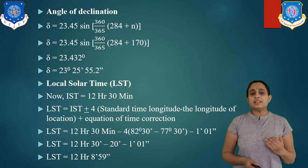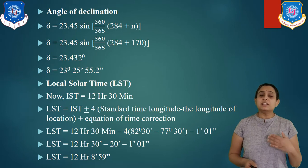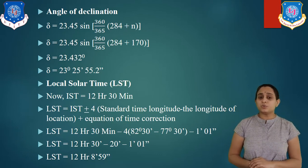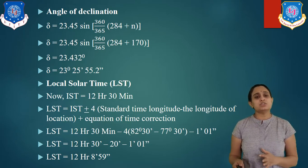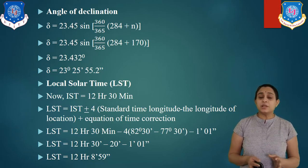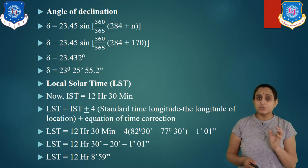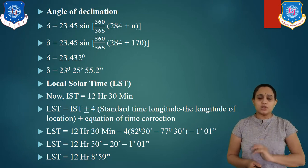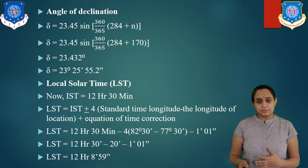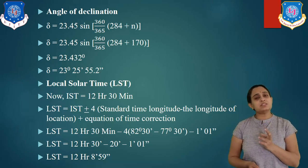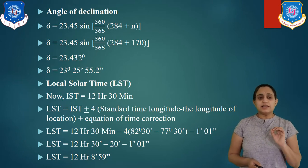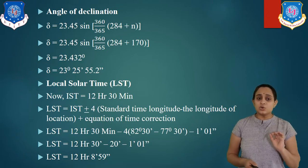Let us put the values. LST = IST (12 hours 30 minutes) minus 4 × (82 degrees 30 minutes − 77 degrees 30 minutes) minus the equation of time correction of 1 minute 01 second. The minus sign is used because IST is greater than 12. Finally, we get local solar time as 12 hours 8 minutes 59 seconds.